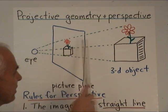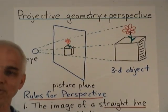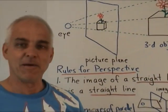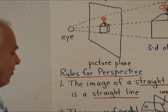Now that kind of perspective map obeys certain rules that were discovered slowly by the artists of the Renaissance. So here are some of the basic rules.